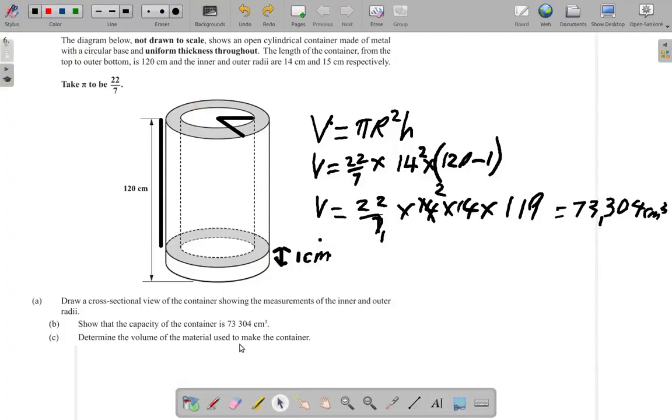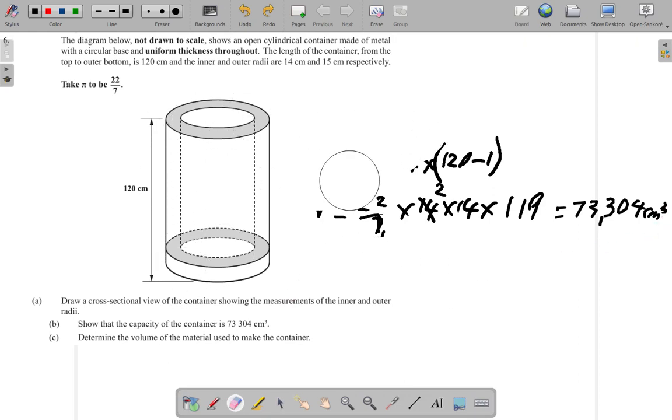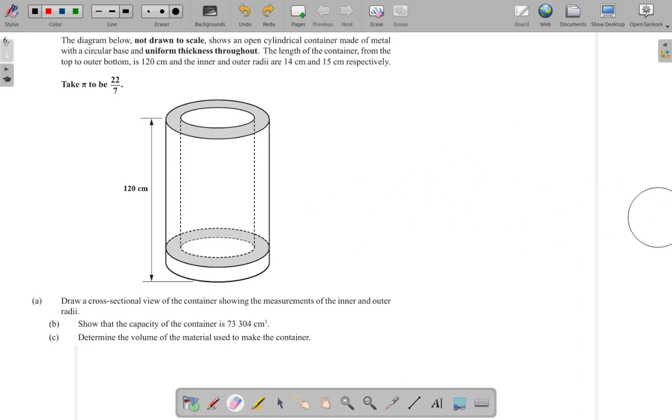Now part C, it says determine the volume of the material used to make the container. Alright, now let's look at that. Let me just erase some of what I have here to make space for the next calculation.